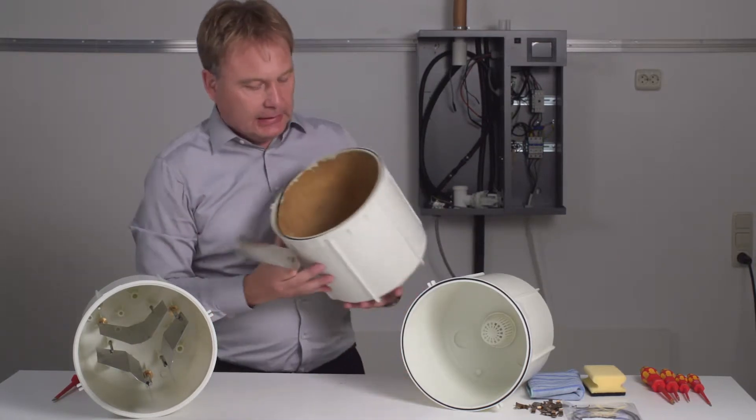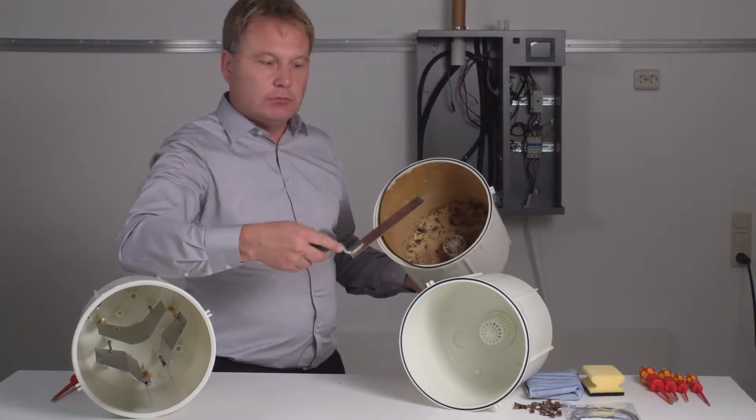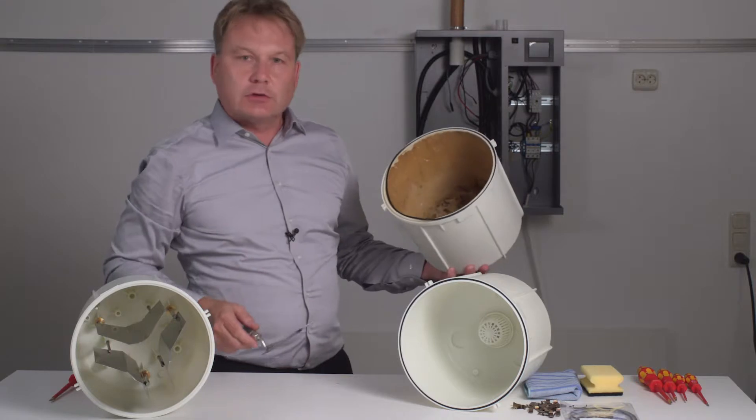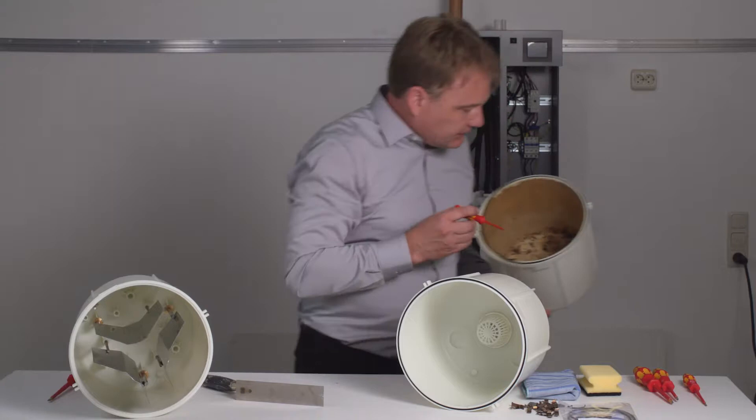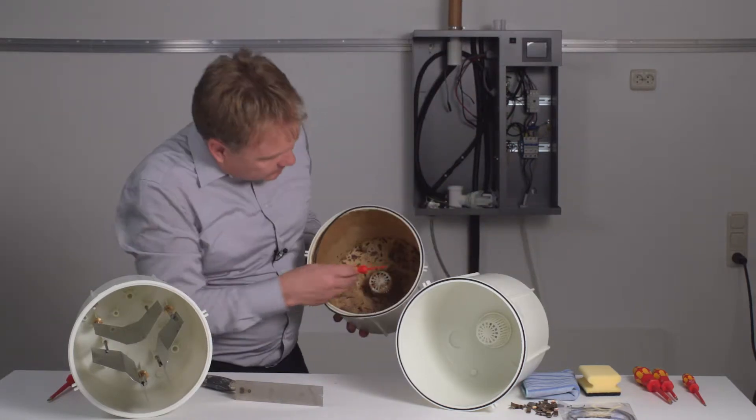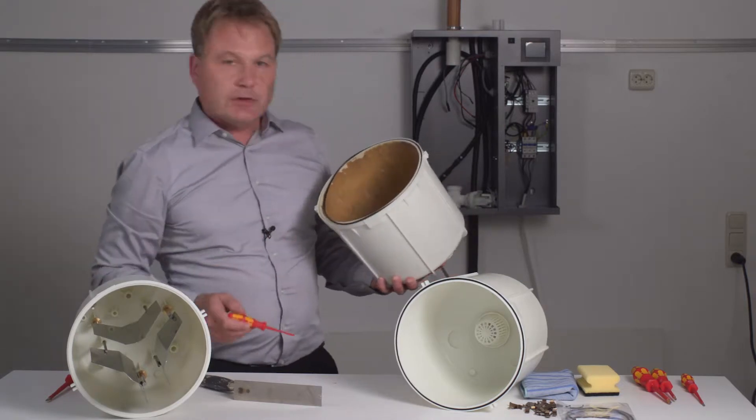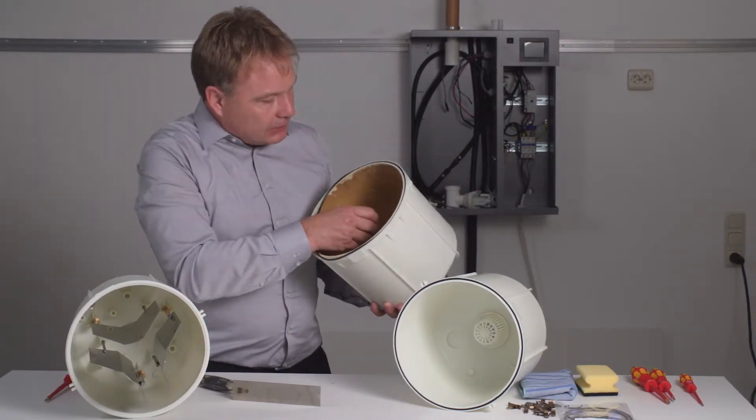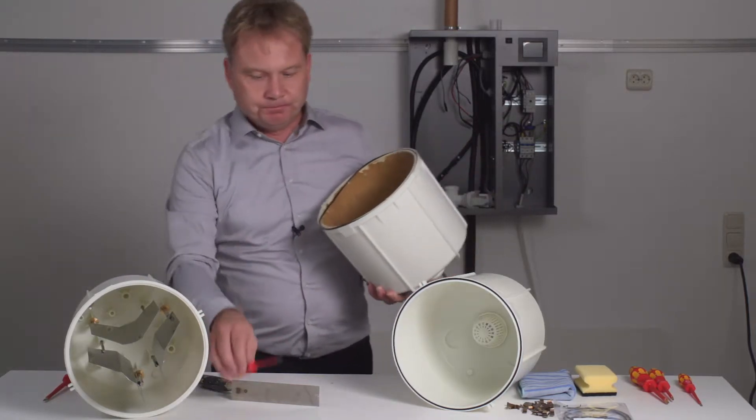The coarse particles of encrustation inside the steam cylinder can simply be scraped off using a spatula. Please also make sure that this strainer that stops the coarse particles is always clean. Take a small screwdriver and clear all the little holes so that the water can pass through again.